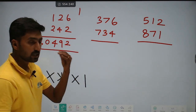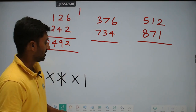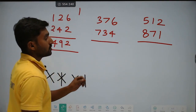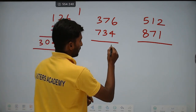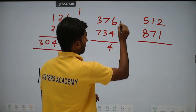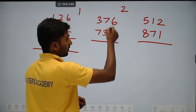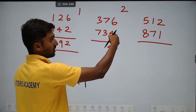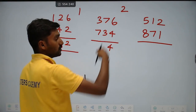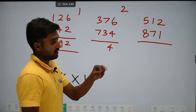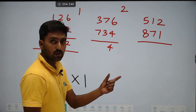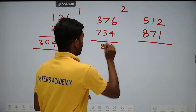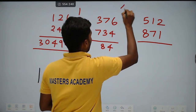First is straight: 6 into 4 is 24. Write 4, carry 2. Next cross: 7 into 4 is 28, plus 3 into 6 is 18. So 28 plus 18 is equal to 46, plus carry 2 is 48. Write 8, carry 4.